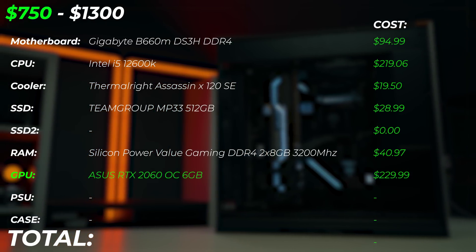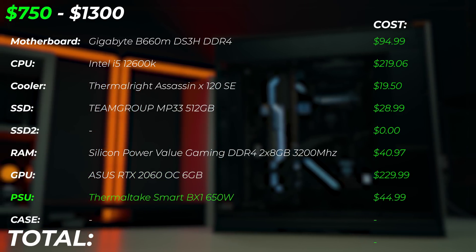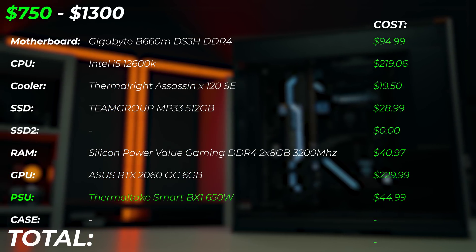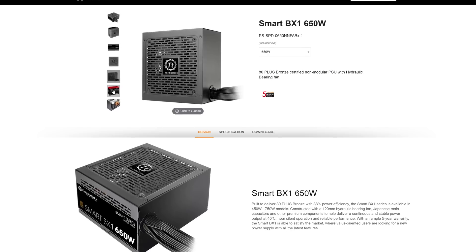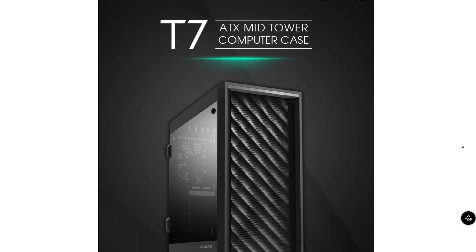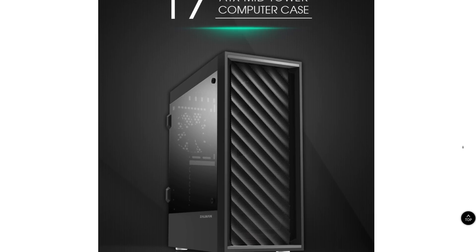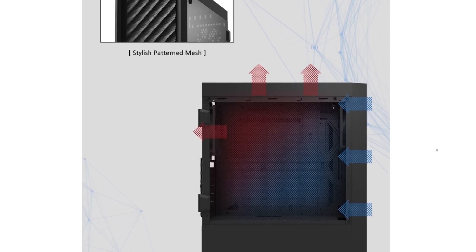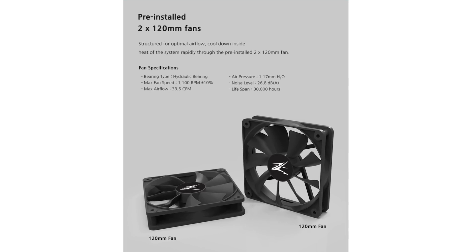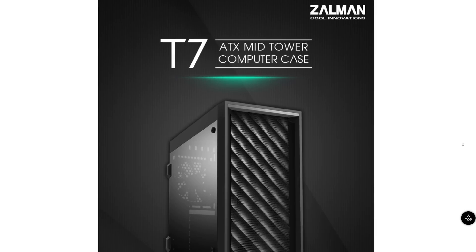It runs very quiet and is low power — absolutely awesome. For the PSU, we're using the Thermaltake Smart 600W ATX PSU, which will be well enough to power your CPU, GPU, and everything in the system with some upgrade headroom. For the case, we have the Zalman T7 ATX mid tower at $55–$56. It looks pretty decent with a mesh front panel and two 120mm included fans for good airflow.